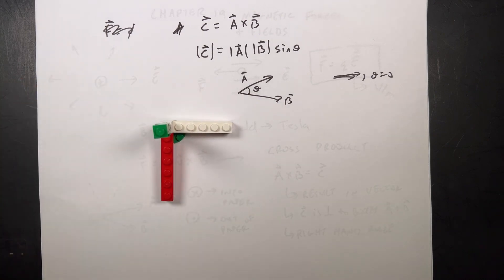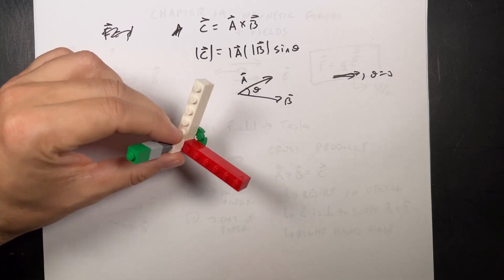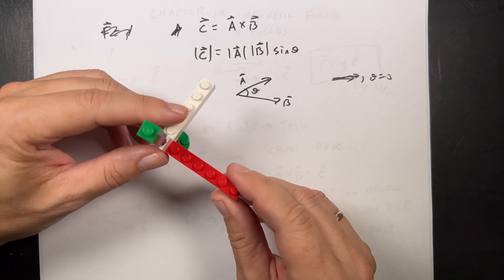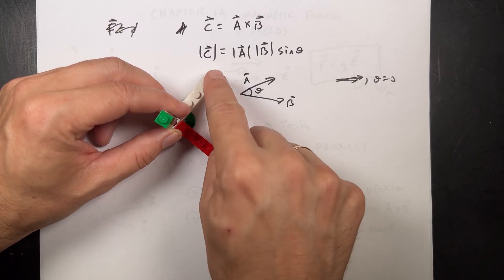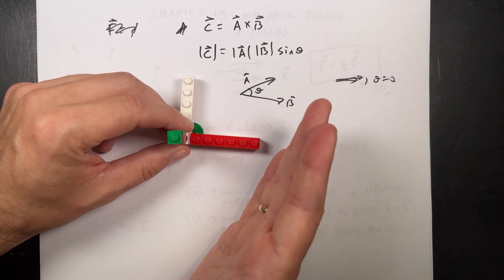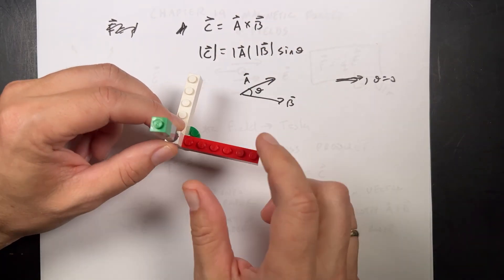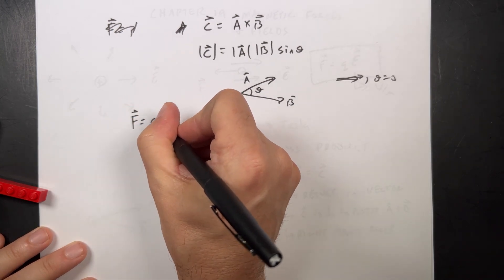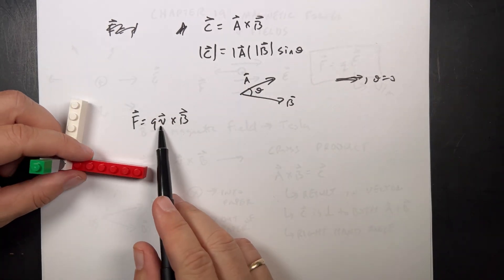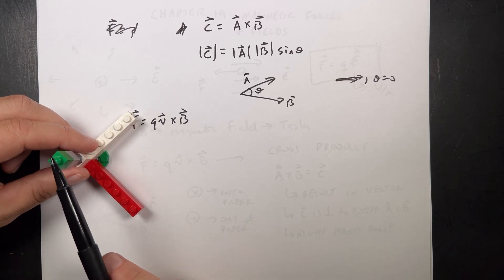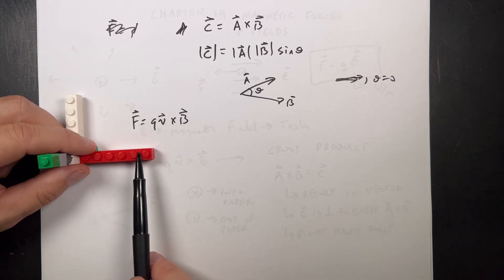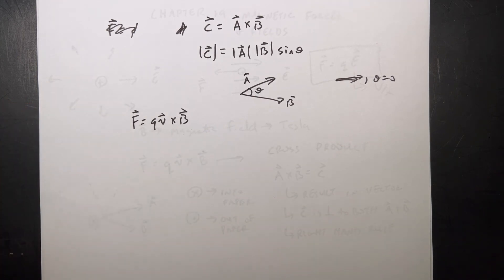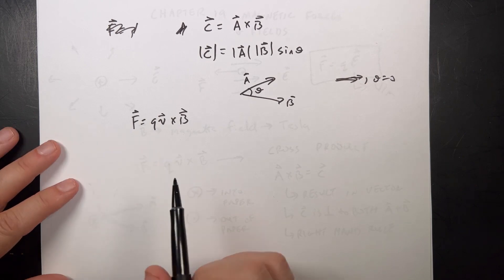I have my right-hand rule Lego piece here — red, white, and green, I made this. If I look at A cross B equals C: if my right hand goes through A and then B, then that would be C. Now let's go back to the definition of the magnetic force: F is QV cross B. So if I call QV the first vector and B the second, then the resultant is F. Note it's QV, not just V — because if the charge is negative, the force will be in the opposite direction of the velocity. That's the magnetic force on a point charge.